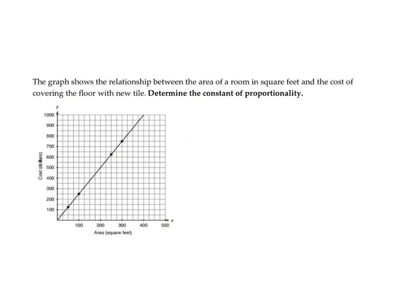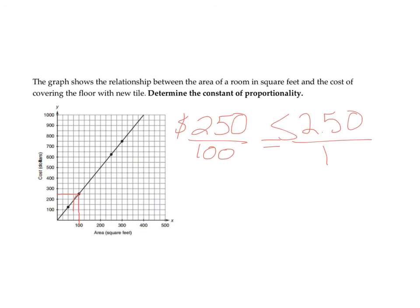The graph shows the relationship between the area of a room in square feet and the cost of covering the floor with new tile. To find the constant rate of proportionality, when looking for points to use they need to hit on a corner. This point gives the ratio $250 to 100 square feet. The constant of proportionality is $2.50 per square foot.